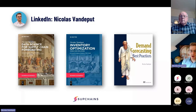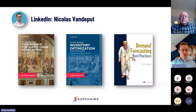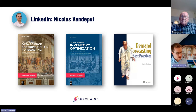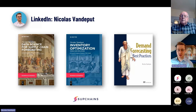Let me introduce myself. I'm Nicolas Vanderpoot. I'm generally passionate about inventory planning and demand forecasting. Over the last years I published three books. The first one is Data Science for Supply Chain Forecasting — a technical book that teaches you from scratch, really from zero, how to make your own forecast using statistical methods and machine learning using Python.